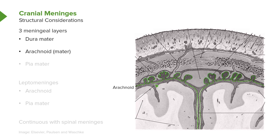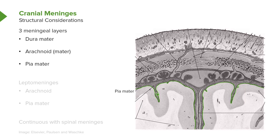Our third and final meningeal layer is referred to as the pia mater. The pia mater is shown here as a very thin green line on the surface of the brain.